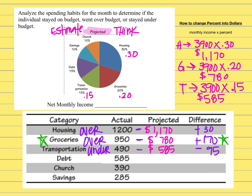Sometimes you go over and sometimes you go under, and sometimes you spend exactly what you want. The way to do that calculation is to multiply your monthly income times your percent, but make sure you type it in as a decimal.